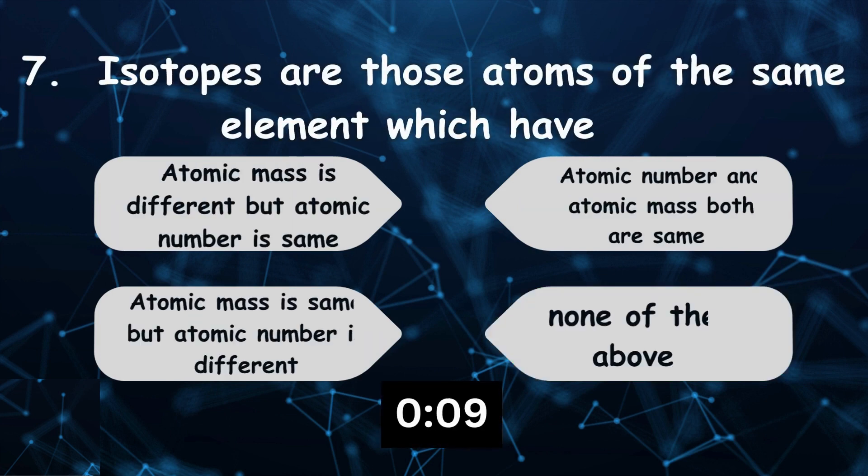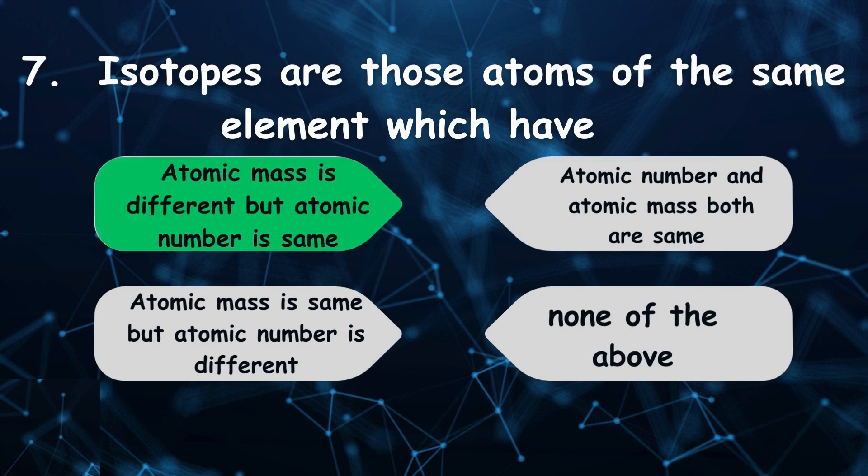Isotopes are those atoms of the same element which have atomic mass is different but atomic number is same.